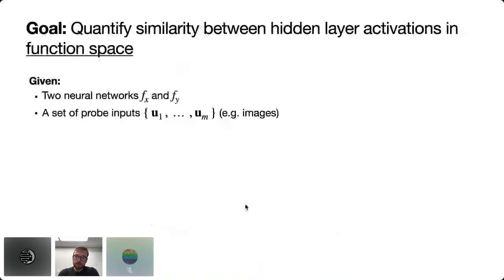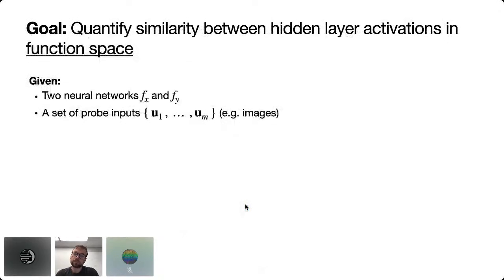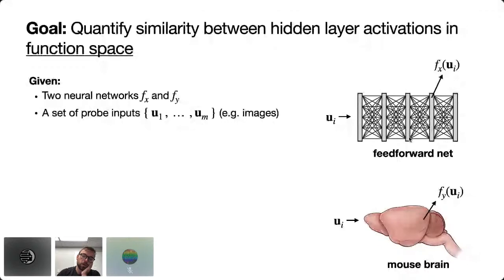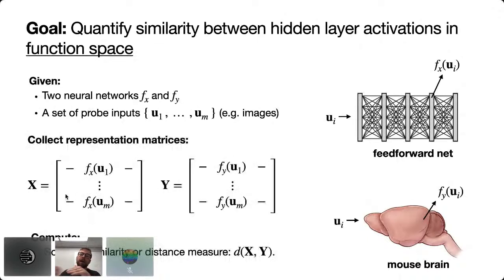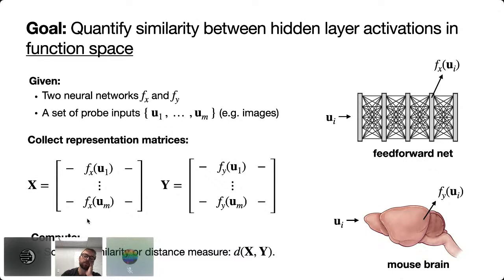Let's formalize what it means to quantify similarity in neural representations. We think of neural networks as functions mapping inputs u1 through um to outputs — neural representations. In both artificial and biological networks, we record the outputs and collect them into matrices X and Y. Importantly, we feed the same set of probe inputs to each network so that the rows of these matrices are matched, giving us a finite approximation to the input-output mapping.